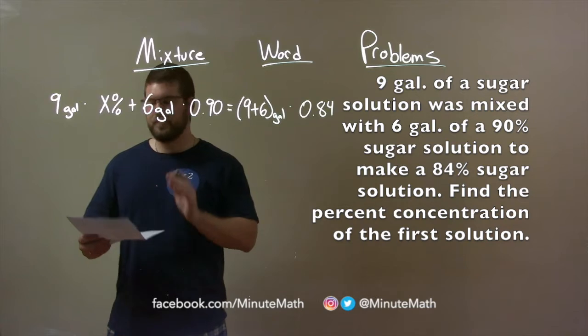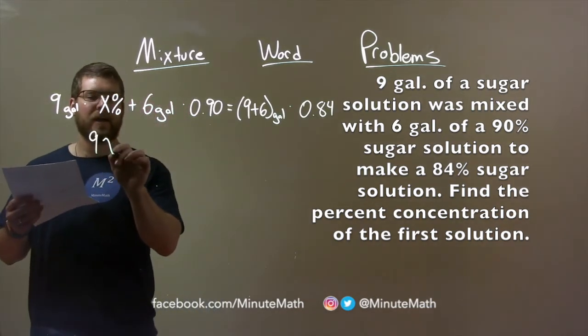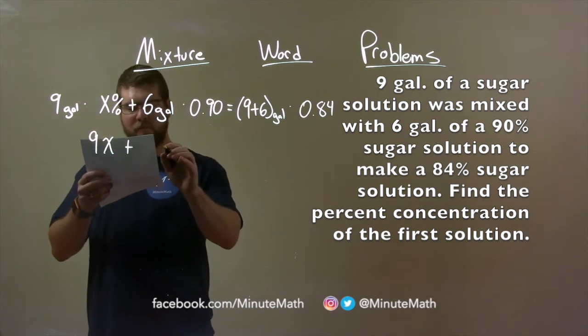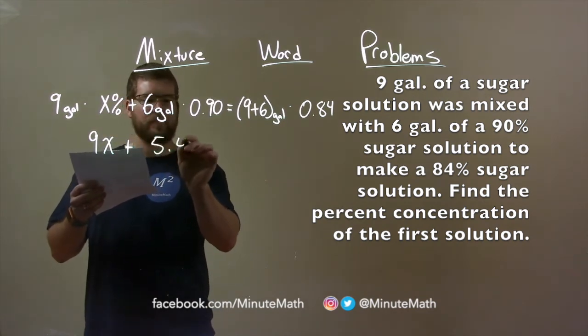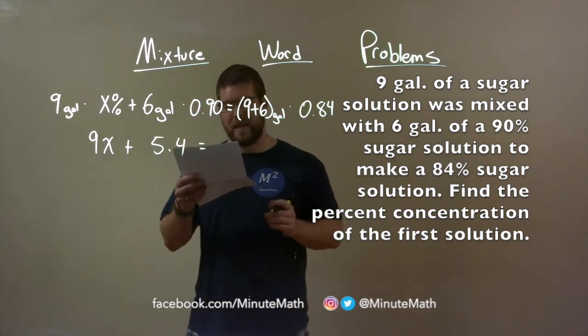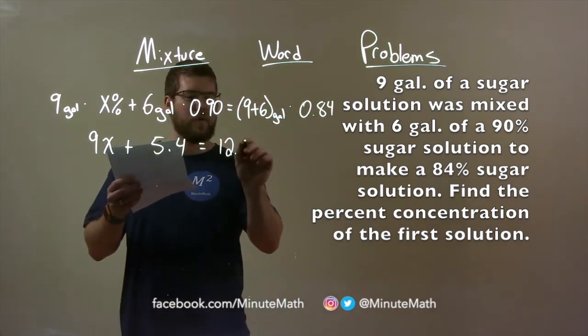We're going to solve for our x percent. So 9x plus 6 times 0.9 is 5.4. 9 plus 6 being 15 times 0.84 is 12.6.